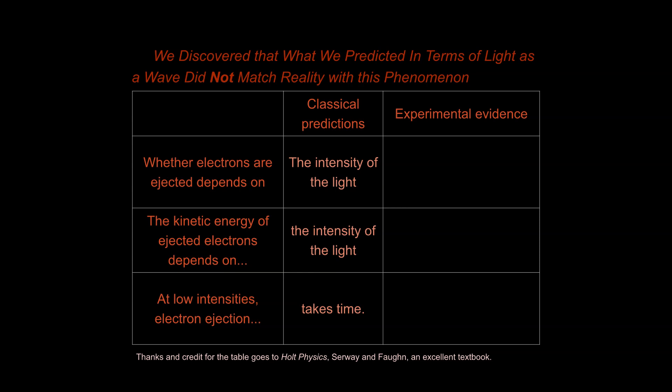So first of all, whether electrons were ejected from the photoelectric effect, from shining light on metal, we figured out that the frequency of the light was the thing that determines whether electrons were ejected. So if you used a lower frequency light, like towards the red end of the spectrum, then you wouldn't maybe have any electrons being ejected off, depending on the metal.